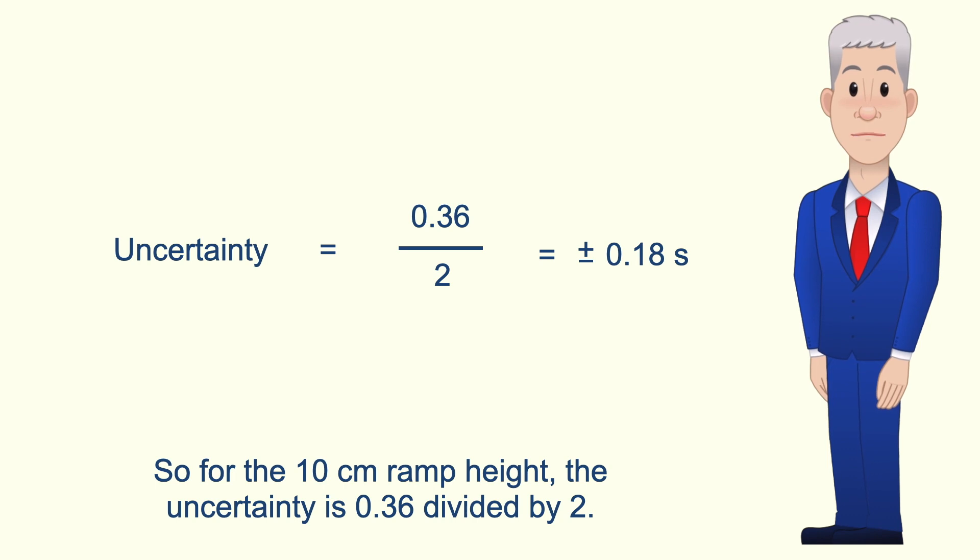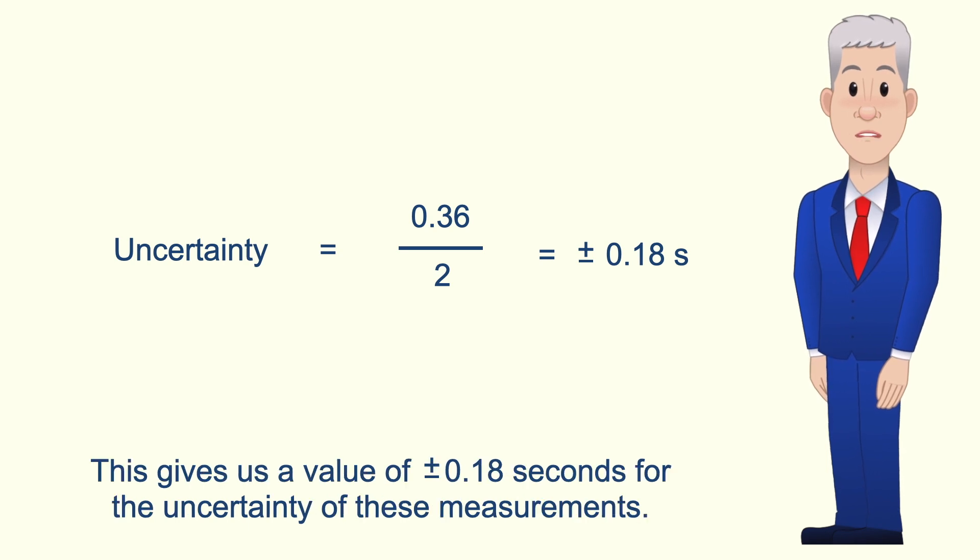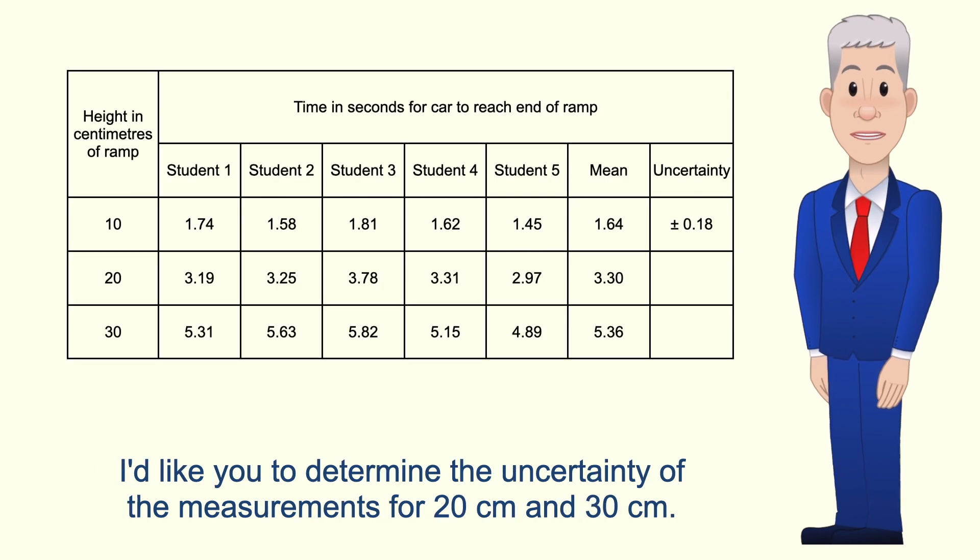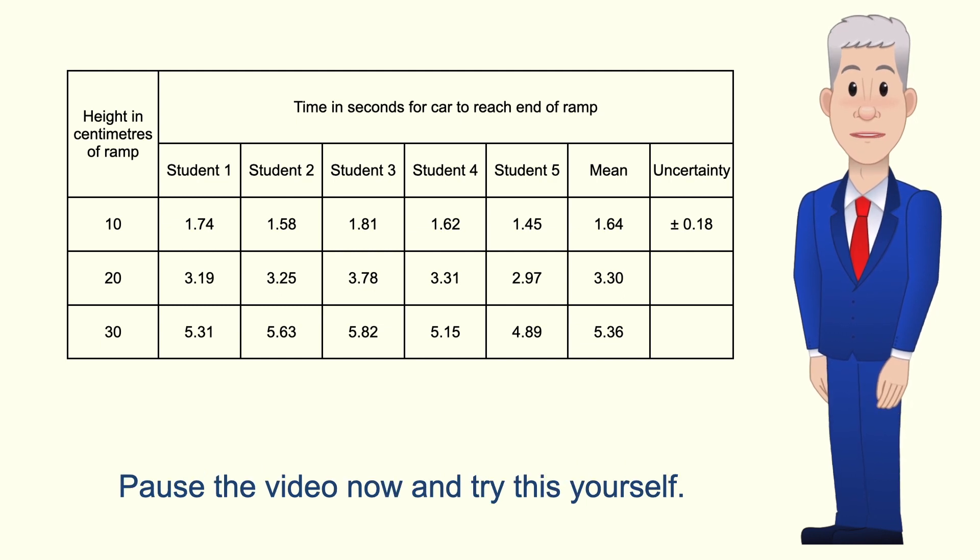So for the 10 centimeter ramp height the uncertainty is 0.36 divided by 2. This gives us a value of plus or minus 0.18 seconds for the uncertainty of these measurements. I'd like you to determine the uncertainty of the measurements for 20 centimeters and 30 centimeters. So pause the video now and try this yourself.